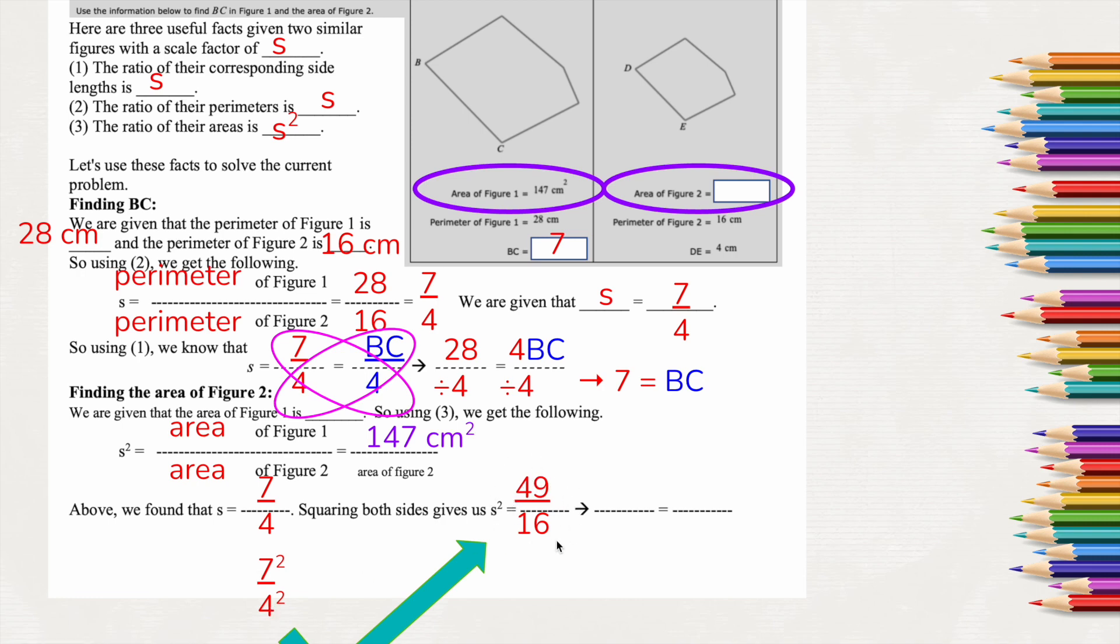So this is the area scale factor because area is a two-dimensional space, not just a length. So I have to square it. So now I can write my proportion. 49 over 16 is equal to the area 147 over A because I just decided that this was figure A for area for figure 2.